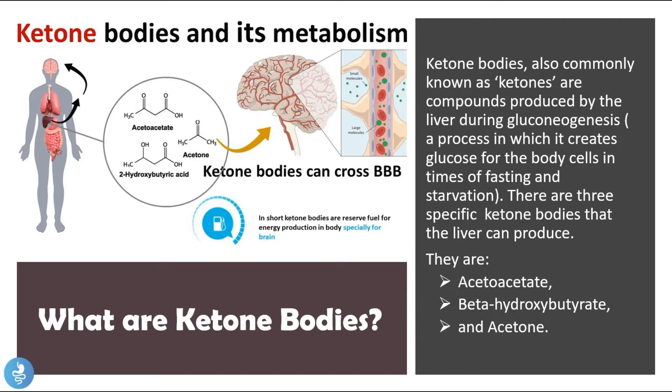There are three main specific types of ketone bodies that the liver can produce: acetoacetate, beta-hydroxybutyrate, and acetone.